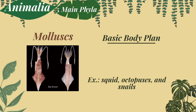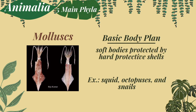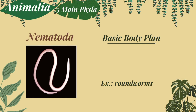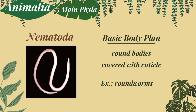The third phylum is mollusks. Mollusks have soft bodies protected by hard protective shells. But there are a few, like squid, who have soft shells inside their body, and octopuses have no shells. Most mollusks are aquatic. Next is phylum Nematoda. They have round bodies covered with cuticle, and they move by contracting the muscles on each side of their bodies alternately. Examples of this phylum are Ascaris and roundworms.